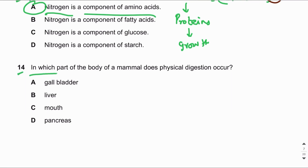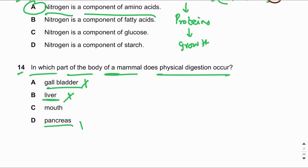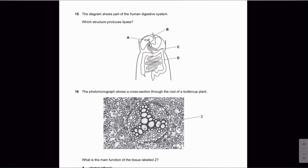MCQ number fourteen: In which part of the body of a mammal does physical digestion occur? Physical digestion is when large food pieces are broken down into smaller pieces. There is no physical or chemical digestion in the gallbladder, liver, or pancreas. However, in the mouth, physical digestion occurs with the help of teeth — chewing is an example of physical digestion. The answer is C.